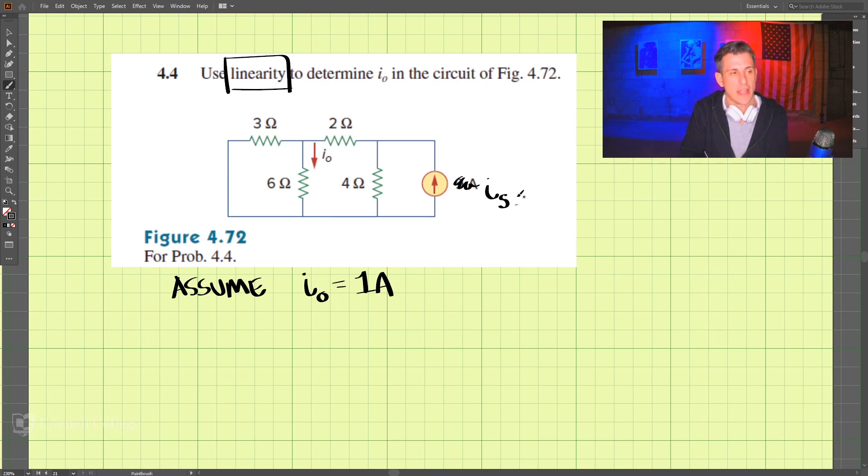i naught is equal to 1 amp. Then we're looking to find the current at the source. We're going to assume that i naught is 1 amp, and that means this voltage at this point is one times this resistance, so this is 6 volts at the top here. We're going to say that this is 0 volts down here.